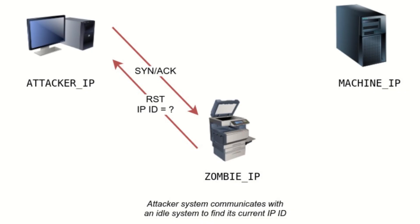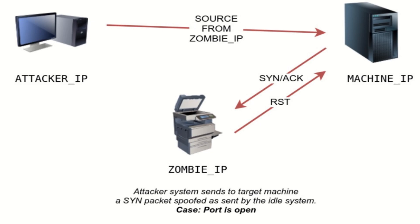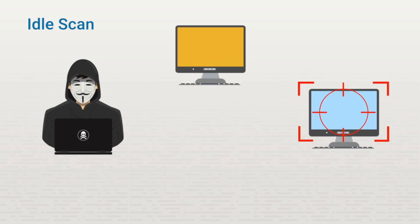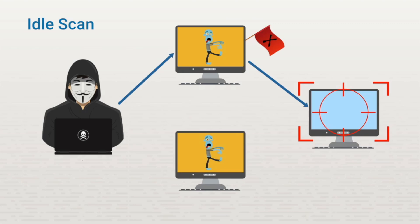The last port scan we'll talk about is the idle scan. This scan is a lot more complicated, but it's stealthy and effective. The hacker finds a target machine but wants to avoid getting caught, so she finds another system to take the blame. This is frequently called a zombie machine because, to the hacker, it's disposable and it creates a good distraction. The scan directs all requests through the zombie machine. If that zombie machine is flagged, the hacker can simply create another zombie machine and continue working. As a security analyst, you should know about this scan and safeguard your ports against any possible attacks.